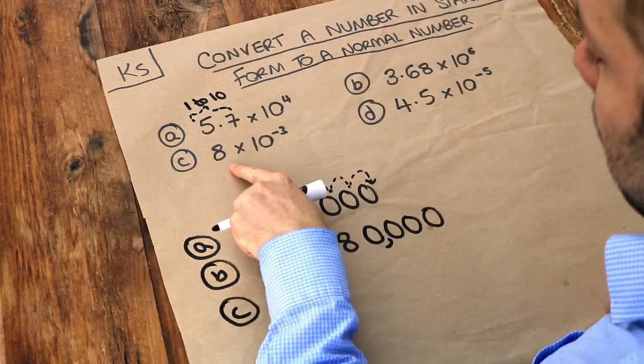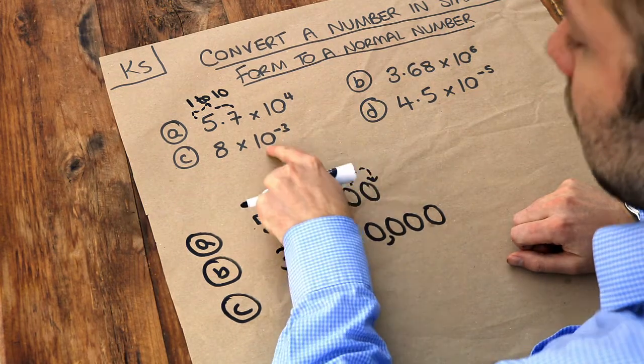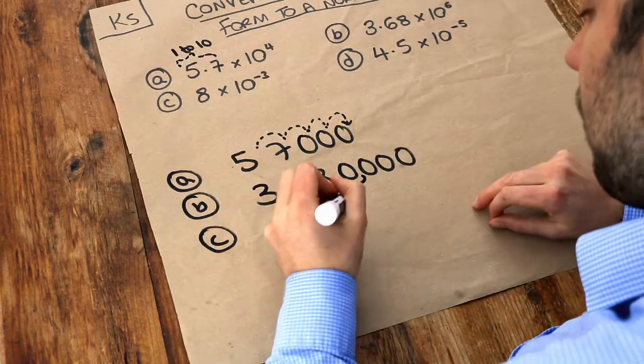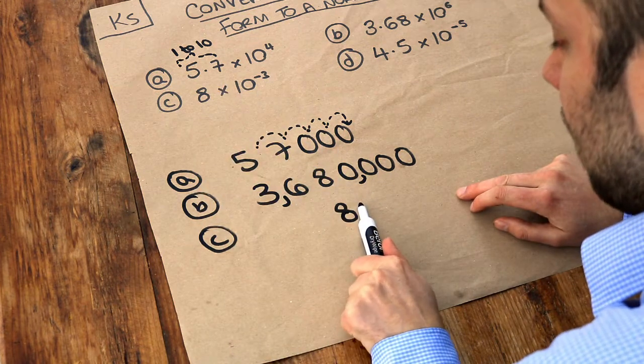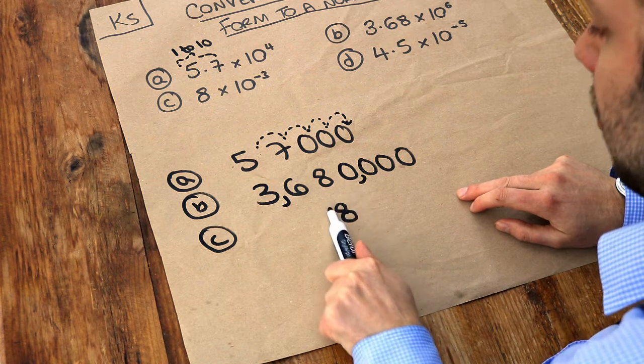Now with these ones, when we have a negative index here, that means that we're going to be dividing by 10 each time. So we're going to be dividing by 10 three times. So if we start with 8, the decimal point is currently at the end of the 8. It's like 8.0 if you like. And it's going to move 3 places to the left.